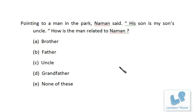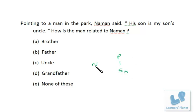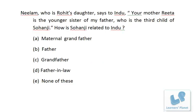Next: Pointing to a man in the park, Naman said, 'His son is my son's uncle.' Naman's son is in the next generation, and the man's son is that son's uncle — meaning both the man's son and Naman are in the same generation. Therefore, the man pointed to is Naman's father. As simple as that.